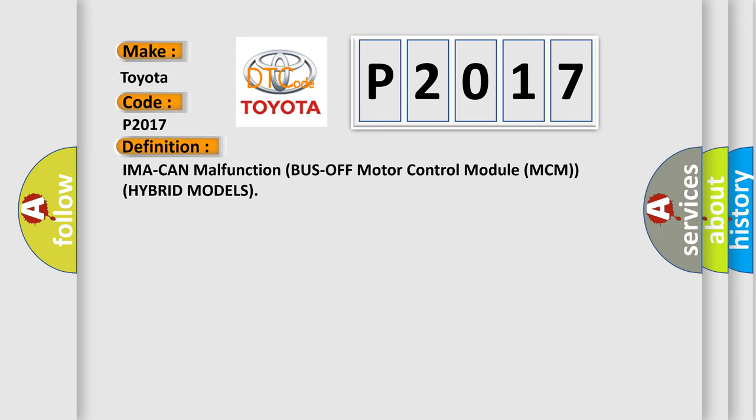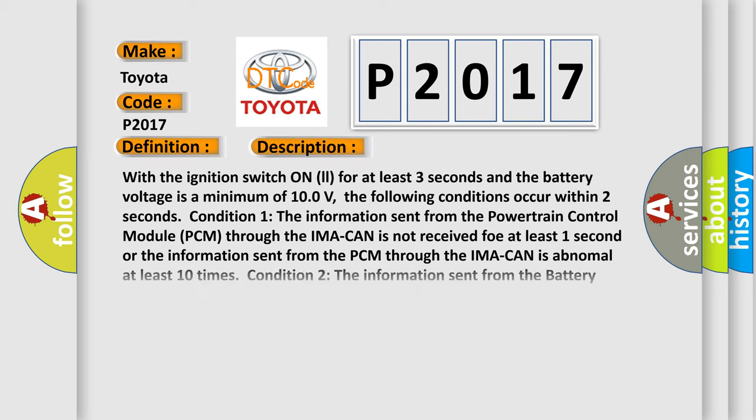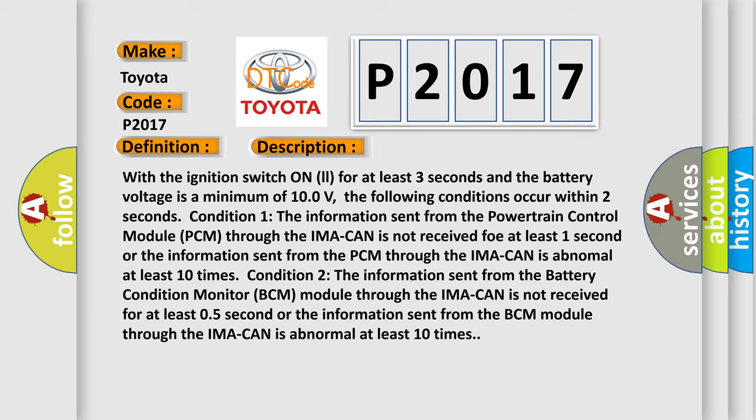The basic definition is: IMA CAN malfunction — bus off, motor control module (MCM), hybrid models. With the ignition switch on for at least three seconds and battery voltage at a minimum of 100 volts, the following conditions occur within two seconds. Condition one: information sent from the powertrain control module (PCM) through the IMA CAN is not received for at least one second, or is abnormal at least ten times. Condition two: information sent from the battery condition monitor (BCM) module through the IMA CAN is not received for at least 0.5 seconds, or is abnormal at least ten times.